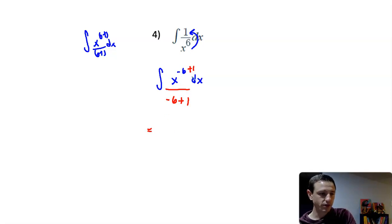So, this is going to be x to the negative 5. Negative 6 plus 1 is negative 5. Bottom, negative 6 plus 1 is negative 5. We have that constant.